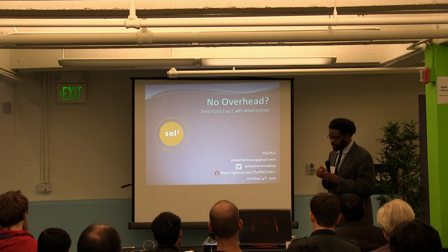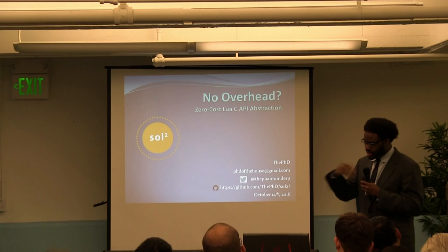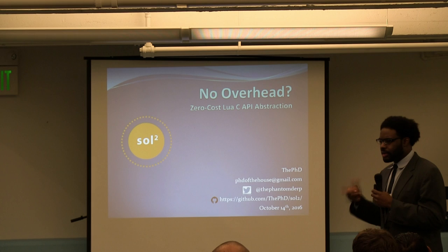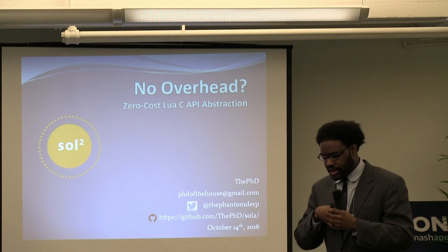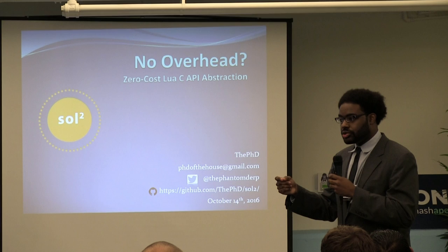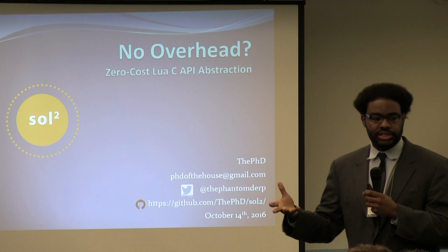I wanted to come here to talk about how to make a zero cost Lua C API abstraction. The last talk was kind of working with the C API directly. This one is about how to wrap it up so you get a little bit more mileage out of it — it's a lot easier to do things like work with lots of functions, find different classes, and access variables. A key goal is to assert that it's zero cost compared to using the plain C API.